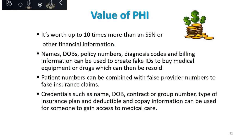This is Carla Monroe. As a business associate of DHS, I want to talk about how to apply this information in daily work. First, the value of PHI — credit card and bank account information used to be considered very valuable, but PHI can now be up to 10 times more valuable. Names, dates of birth, policy numbers, and billing information can be used to create fake IDs, drugs can be resold, insurance claims can be submitted fraudulently, and people can access medical care under someone else's identity. That's why HIPAA is so important.